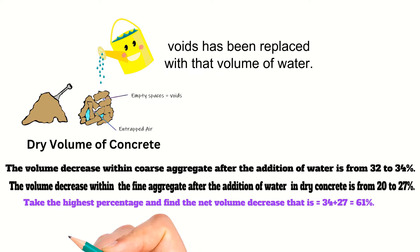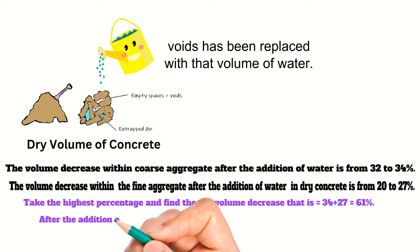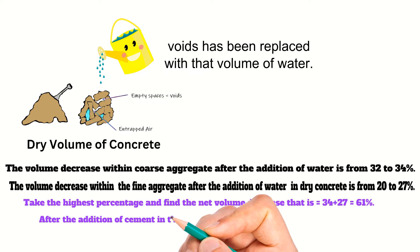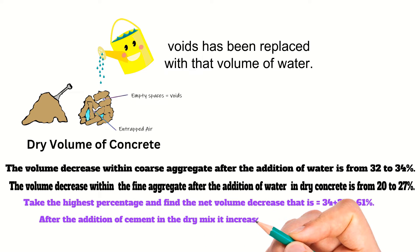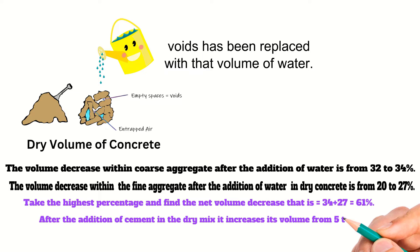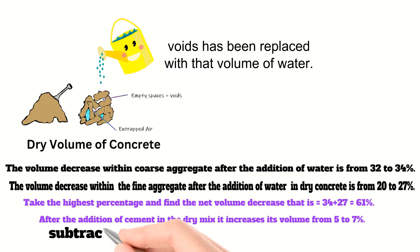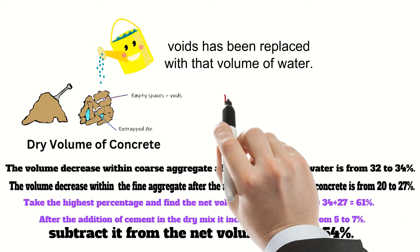After the addition of cement in the dry mix, it increases the volume because cement is a very fine material and it replaces some of the voids — that increase is from 5 to 7 percent. So we subtract it from the net volume: 61 minus 7 gives us 54 percent.